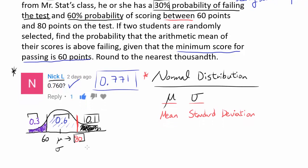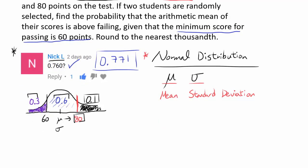If two students are randomly selected, we want to find the probability that the arithmetic mean of their scores is above the failing threshold. The only way we can find the area under the normal distribution is if we know the mean and standard deviation. Since they aren't given directly, we have to figure them out using the information provided — and we can do exactly that.